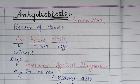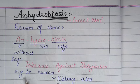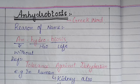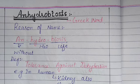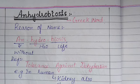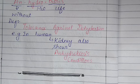Lastly, we discussed all five adaptations. The last term is anhydrobiosis. This is a Greek word, which is a combination of three words. The reason for its naming: 'an' means without, 'hydro' means water, and 'biosis' means life. Its definition is tolerance against dehydration — meaning that any living organism's body must face and tolerate water loss. In humans, the kidneys perform anhydrobiosis.